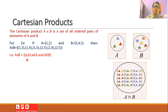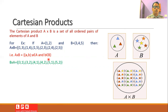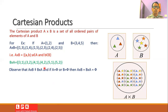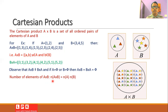This is a set of all ordered pairs (a, b) where a belongs to A and b belongs to B. It is also possible to take the Cartesian product B cross A, which gives ordered pairs: (3,1), (3,2), (4,1), (4,2), (5,1), and (5,2). One can easily observe that A cross B is not equal to B cross A because both sets are different. If either A or B is the null set, then A cross B equals B cross A equals the null set. The number of elements in A cross B is n(A) × n(B); so if A has two elements and B has three elements, then A cross B has 2 × 3 = 6 elements.